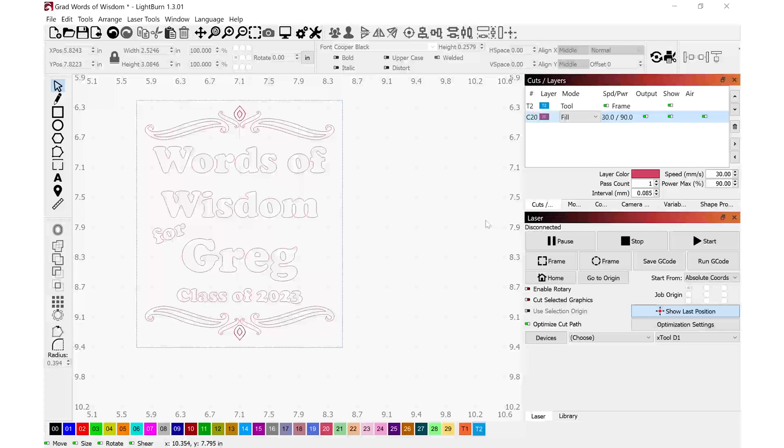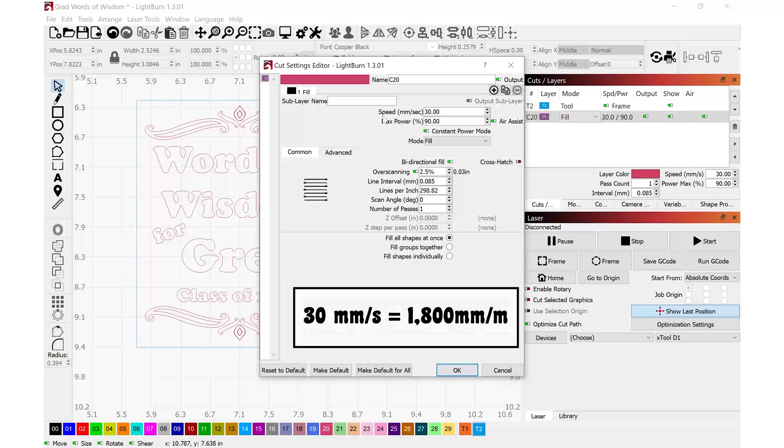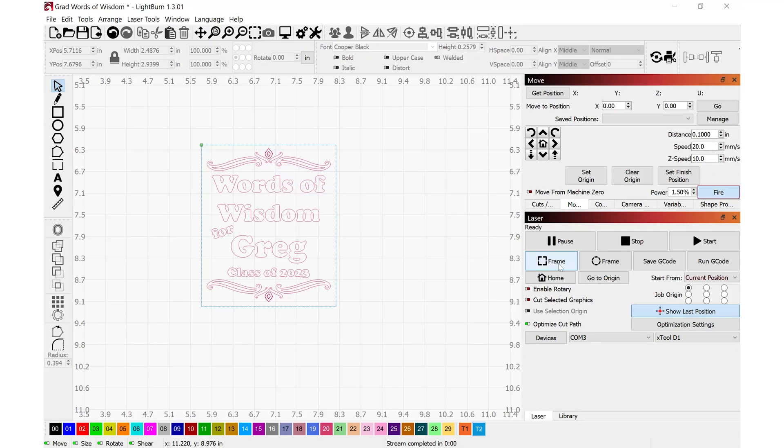Let's take a closer look at the settings that I'll be using. I'll double click this layer here and that brings up this sub menu where I have a speed of 30 millimeters per second, a maximum power of 90%. I have bi-directional fill is on, over scanning is on, and my lines per inch is set to just shy of 300. This looks good. I'm ready to grab some safety glasses and hit the start button.